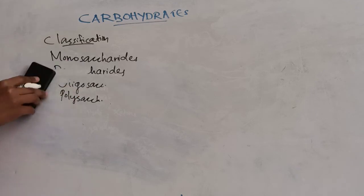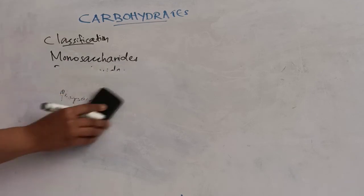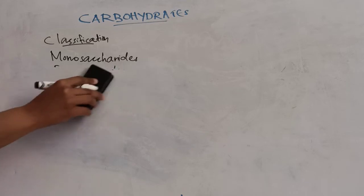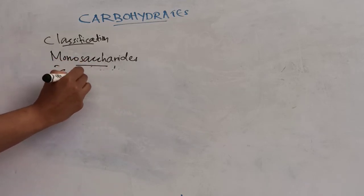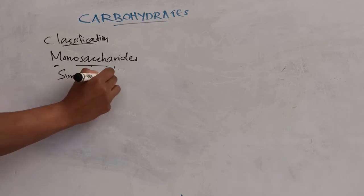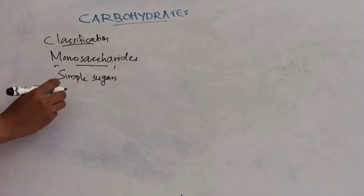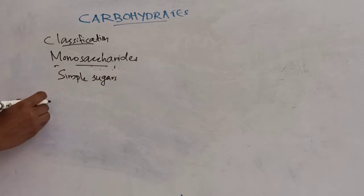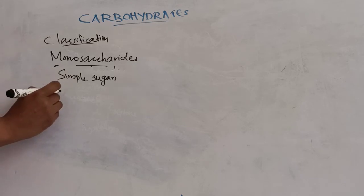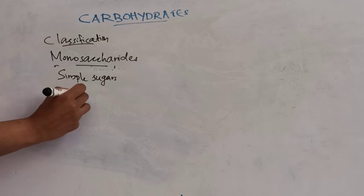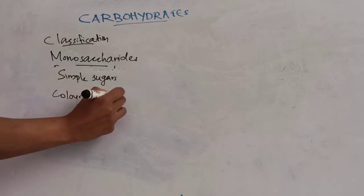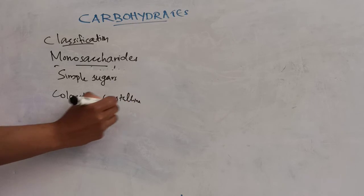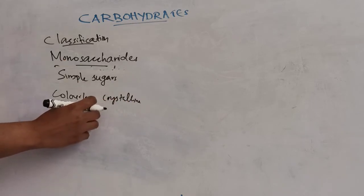The first group is monosaccharides. These are also called simple sugars, which cannot be hydrolyzed further into simpler forms. These monosaccharides exist as colourless, crystalline, and water-soluble solids.